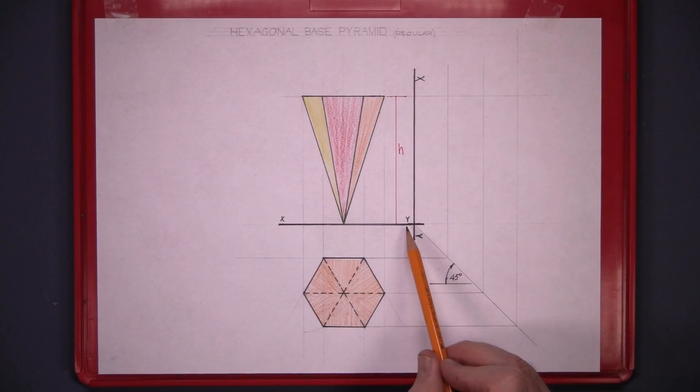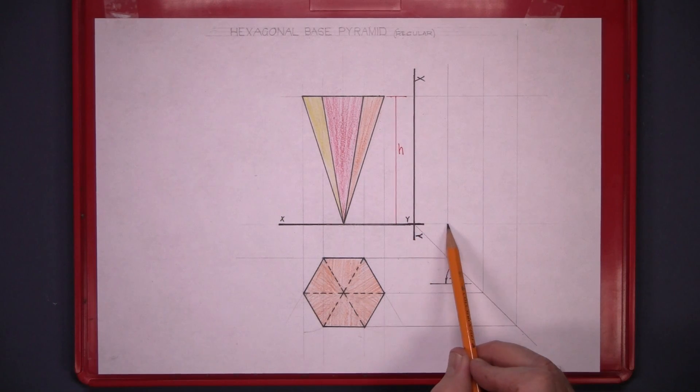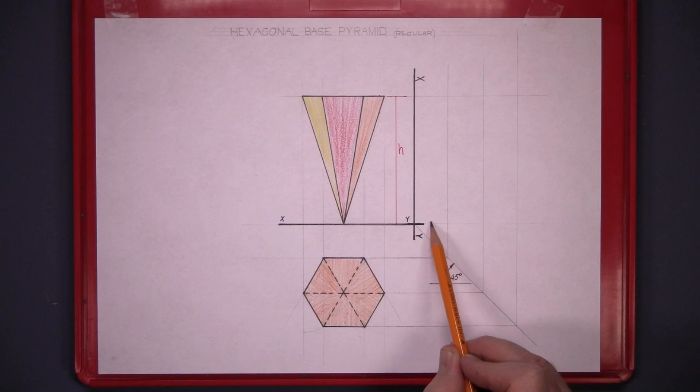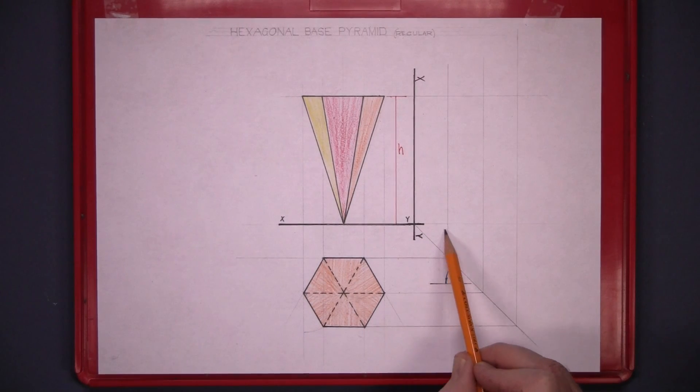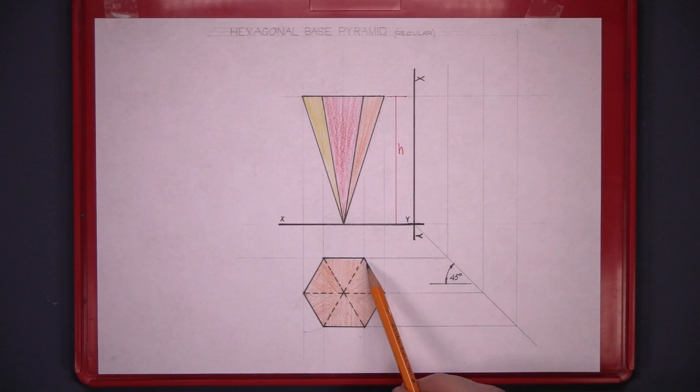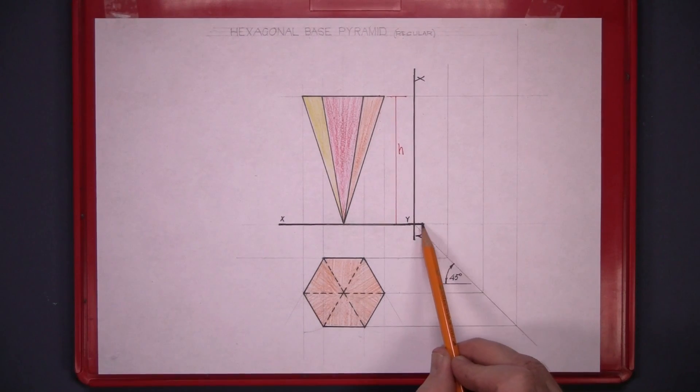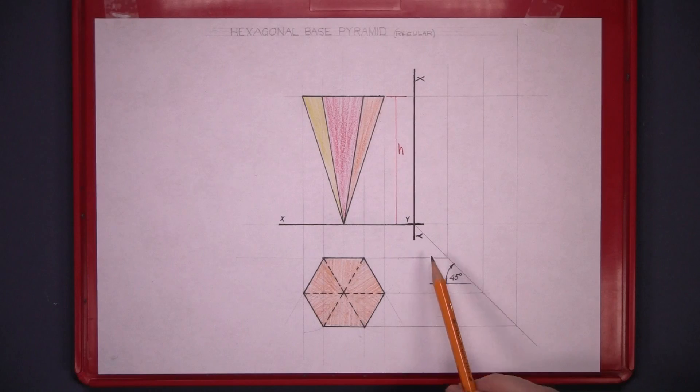That means that this distance here is the same distance across there is the same distance across there. That's a 45 degree triangle there. Two sides are equal. That distance is equal to that distance. The same is true for this line here. That there's your triangle again. So your distances are the same.